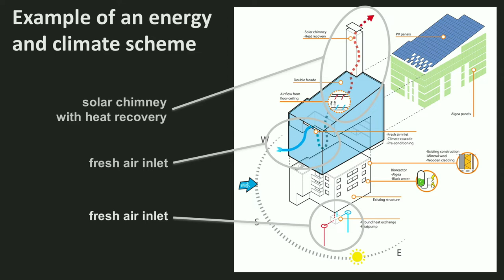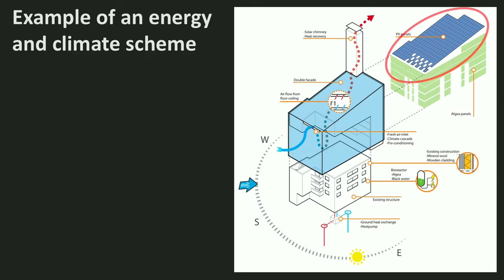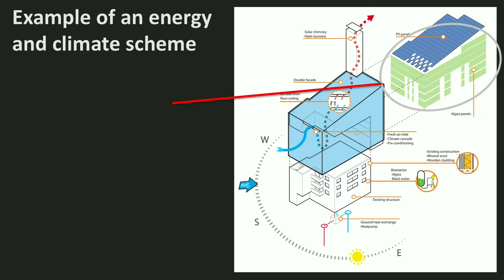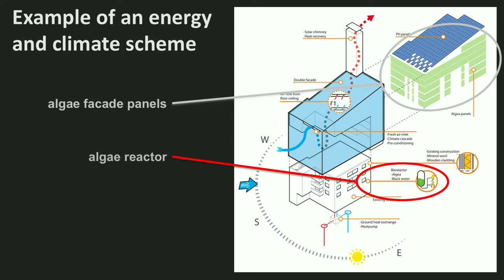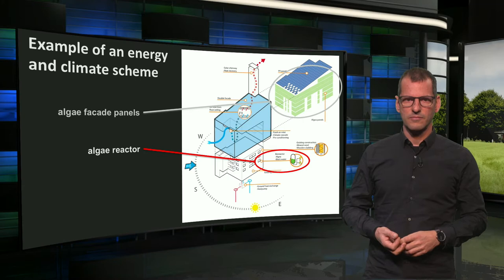The heat extracted is then stored in an aquifer thermal energy storage underground. In wintertime, this heat will be used to heat the building. The PV roof is covered with solar panels to produce the electricity required. The facade also contains algae panels — panels with transparent tubes in which wastewater is purified by algae. These algae tubes have to be put in daylight, so they can be combined with facade panels. The algae can be harvested and used for proteins, nutrients, or refined to biodiesel, a renewable fuel. This is done in an algae reactor, which the student also included in his redesigned building.